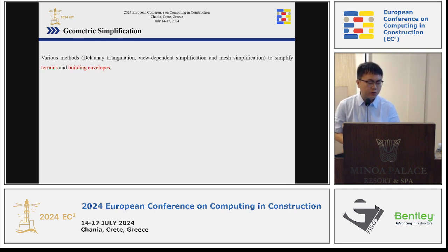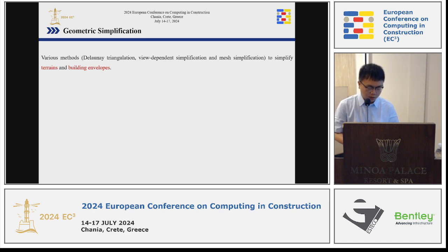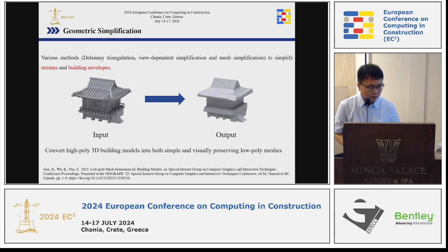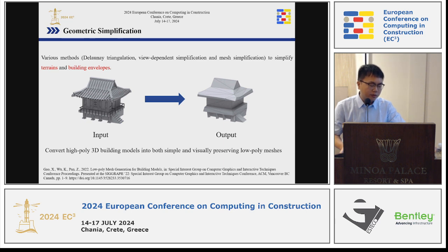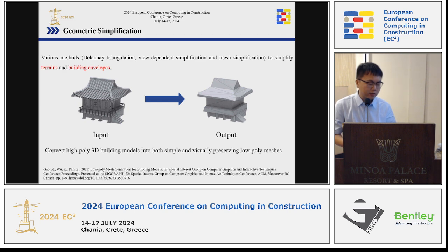The second topic is Geometric Simplification. Scholars use various methods like Delaunay triangulation, level-of-detail-based simplification, and mesh simplification to simplify terrains and building envelopes. Here is an example: scholars converted high-poly 3D building models into simplified low-poly meshes. As we know, higher-detail digital models contain more information, but they increase computational cost. So for applications that do not need detailed information or for large-scale applications, we don't need LOD3 or LOD4 models — LOD2 may be sufficient.